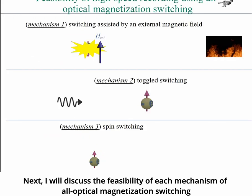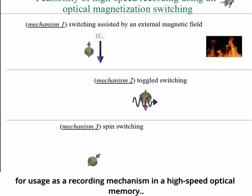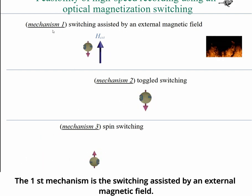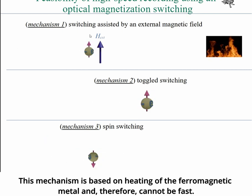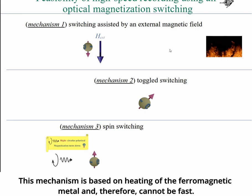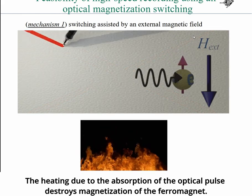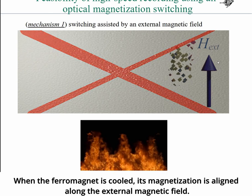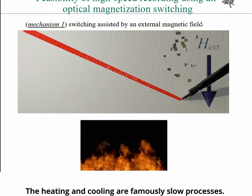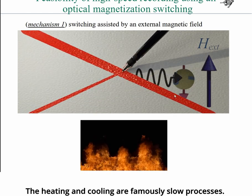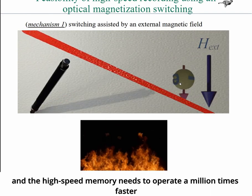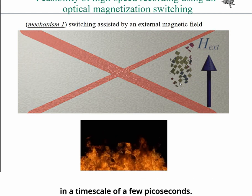I will discuss the feasibility of each mechanism of all-optical magnetization switching for usage as a recording mechanism in high-speed optical memory. The first mechanism is switching assisted by an external magnetic field. This mechanism is based on heating of the ferromagnetic metal and therefore cannot be fast. The heating due to absorption of an optical pulse destroys the magnetization; when the ferromagnet cools, its magnetization aligns along the external magnetic field. The fastest timescale of cooling is a few microseconds, but high-speed memory needs to operate a million times faster, at timescales of a few picoseconds.